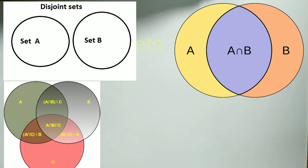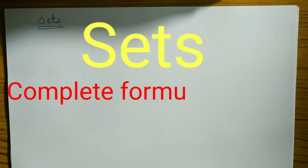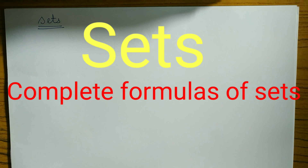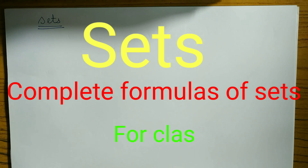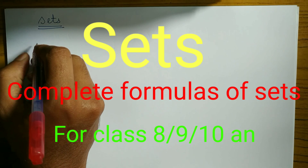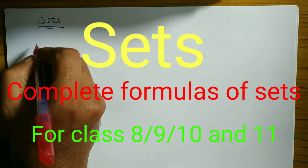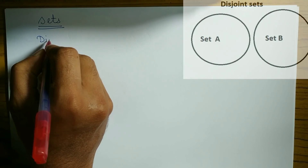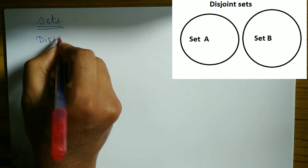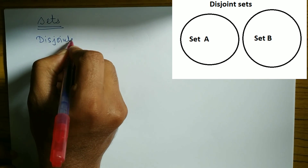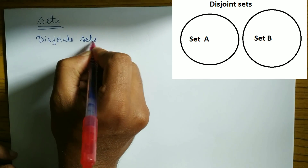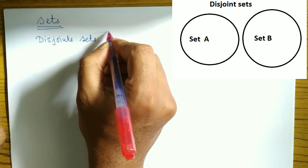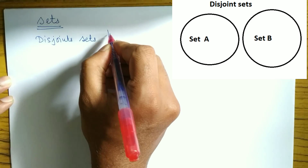Today's topic is sets. I'm going to provide you the complete formula of sets with concepts. First, I'm going to cover disjoint sets. What is a disjoint set? A disjoint set is a set which has no common elements. By drawing a diagram I can show you.